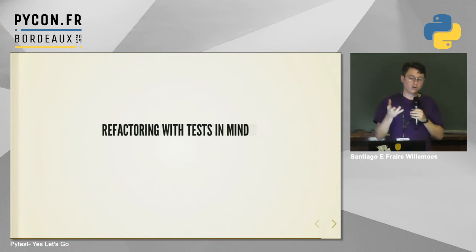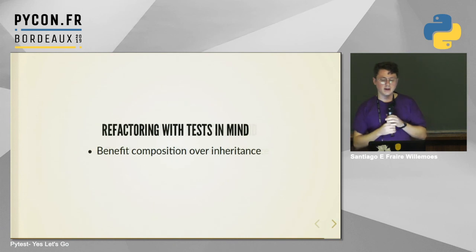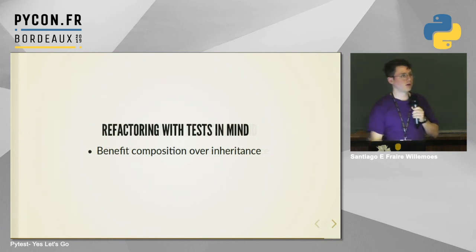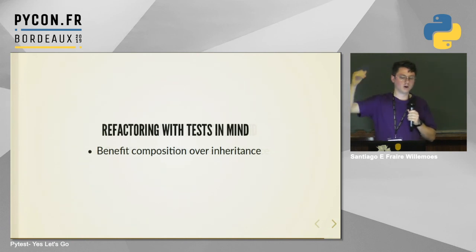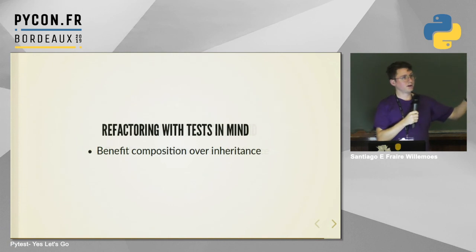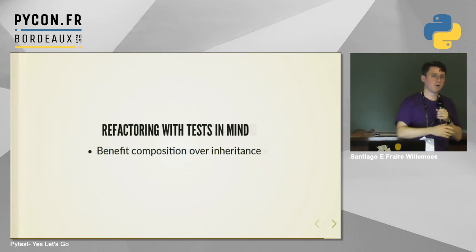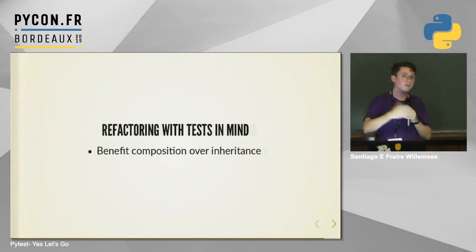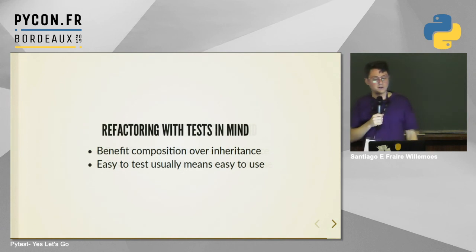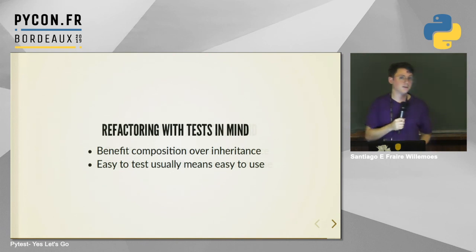What can we conclude? First, it's usually important to favor composition over inheritance. In the mock example with the protocol, I was passing it as a parameter rather than inheriting or hard-coding it. This helped me write a better test because I was able to mock it. Otherwise, you end up patching your code. When it's easy to test, it usually means it's easy to use.